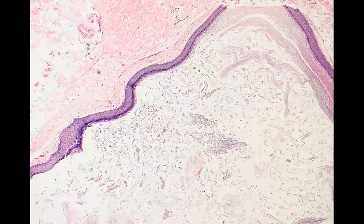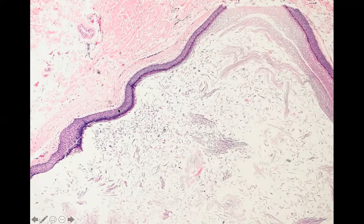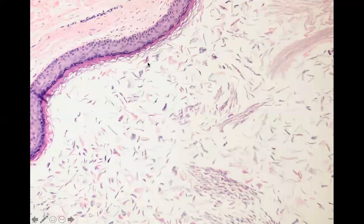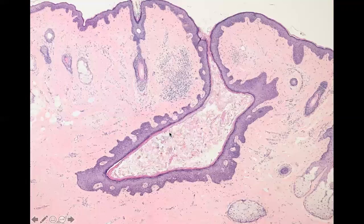Starting with follicular cysts, this is an infundibular cyst. The lining, which is composed of the infundibulum of the hair follicle, recapitulates the epidermal lining. That's why they're called epidermoid cysts, where you have a basal layer, a spinous layer, and a granular layer, in addition to your cornified cells. Here's an up-close picture of the lining that resembles the epidermis and some cornified cells.